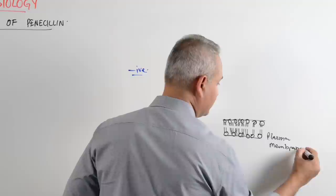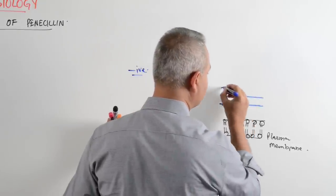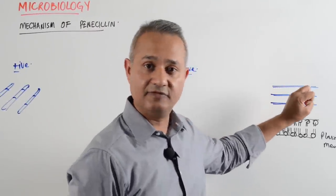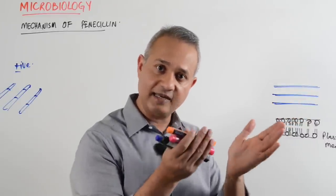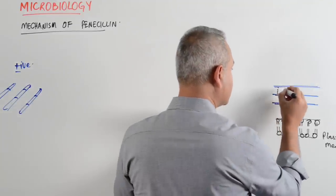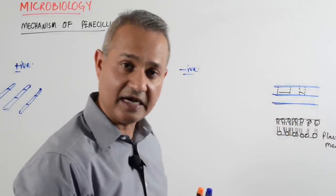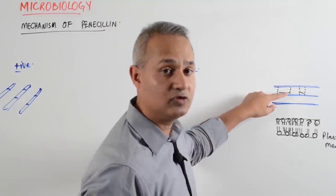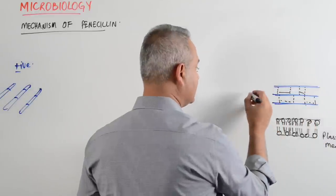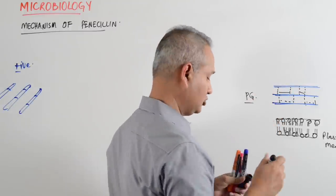Outside the plasma membrane: in gram negative there are 3 layers of peptidoglycans, and in gram positive up to 60 layers of peptidoglycans. The peptidoglycans are cross-linked with each other through peptides. Peptidoglycan has a glycan part (sugars) and a peptide part. The peptide parts are cross-linked to each other. Penicillin's function is to block these cross-links and thereby disrupt the peptidoglycan layer, ultimately causing the bacteria to break.